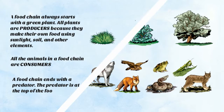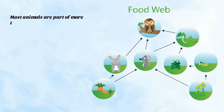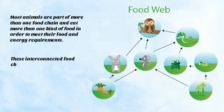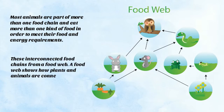A food chain ends with the predator — the predator is at the top of the chain. Most animals are part of more than one food chain and eat more than one kind of food in order to meet their food and energy requirements. These interconnected food chains form a food web. A food web shows how plants and animals are connected in many ways to help them all survive.